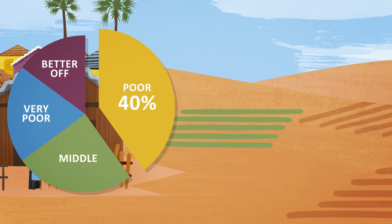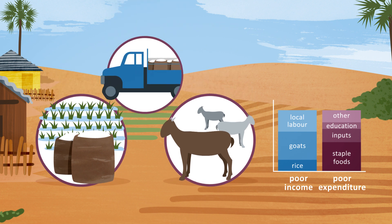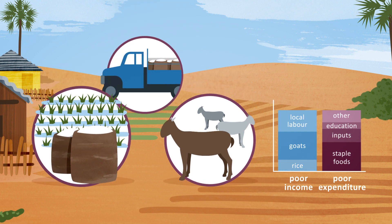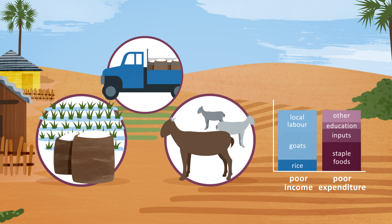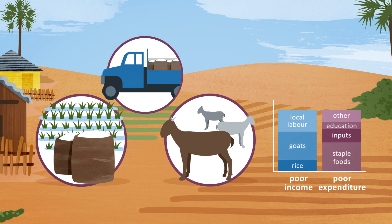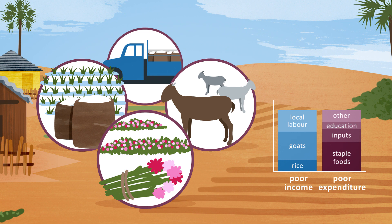The baseline information helps the organisation to shortlist interventions that would be relevant to these poor households: a rice intensification project, a project to support goat trading, and a market intervention to reduce the price of staple food. These activities aim to improve income and expenditure markets that are already important in the local economy. The organisation also wants to consider a project to cultivate flowers for sale on local markets — a new activity in the area intended to diversify livelihoods.